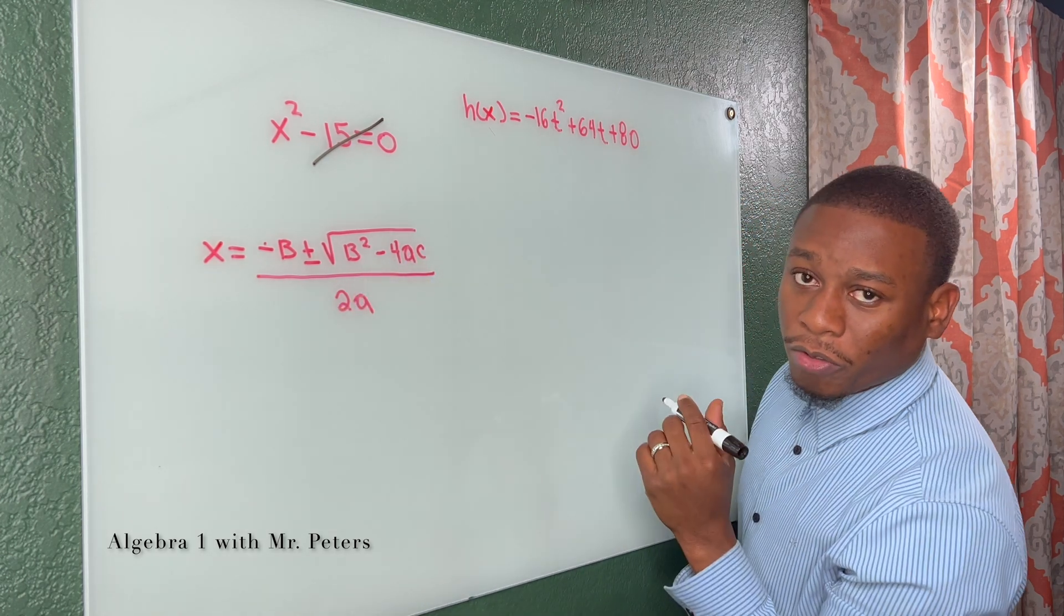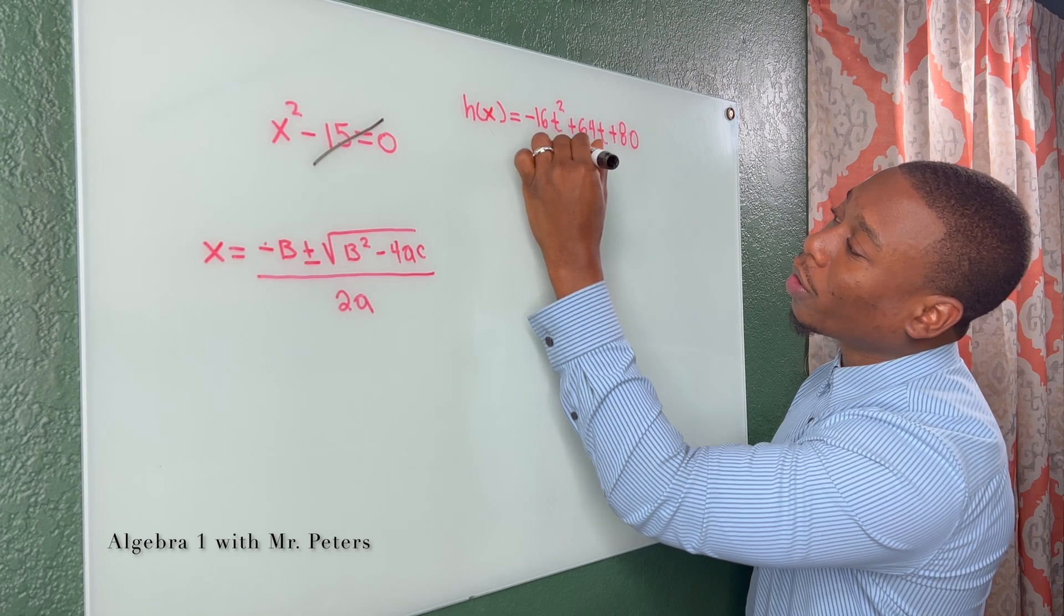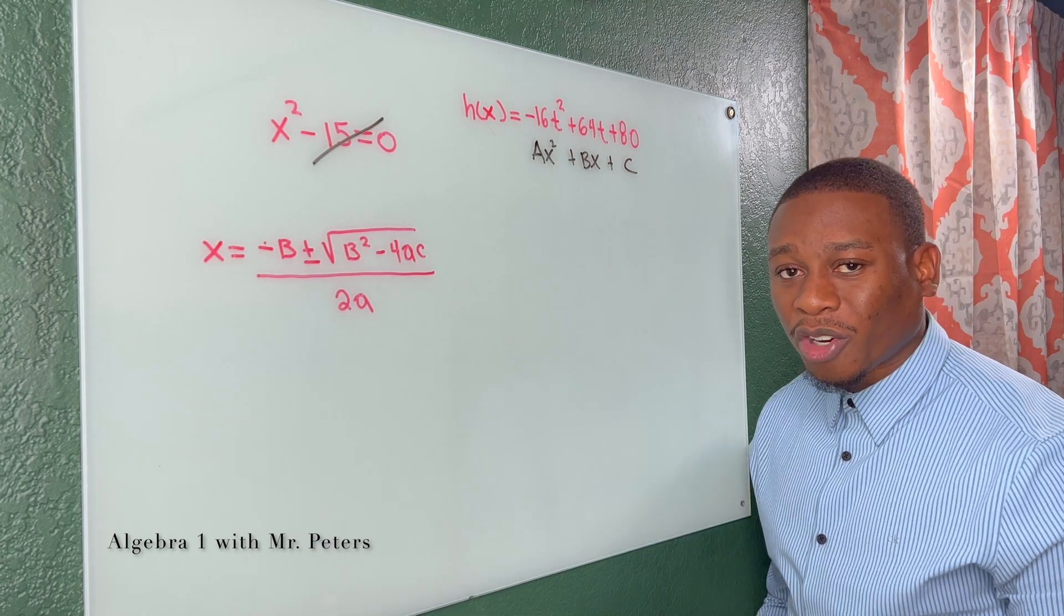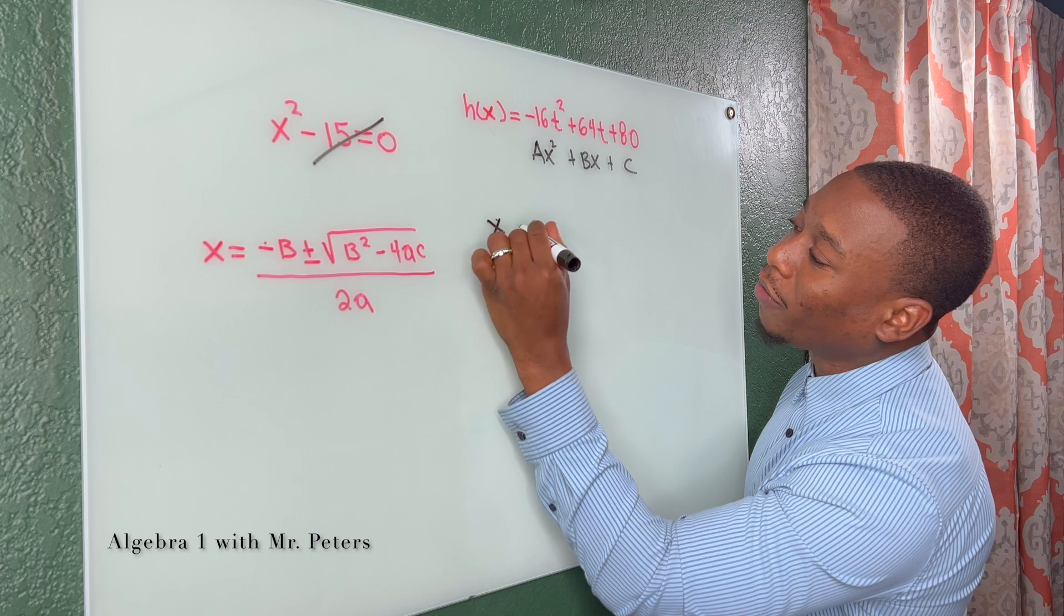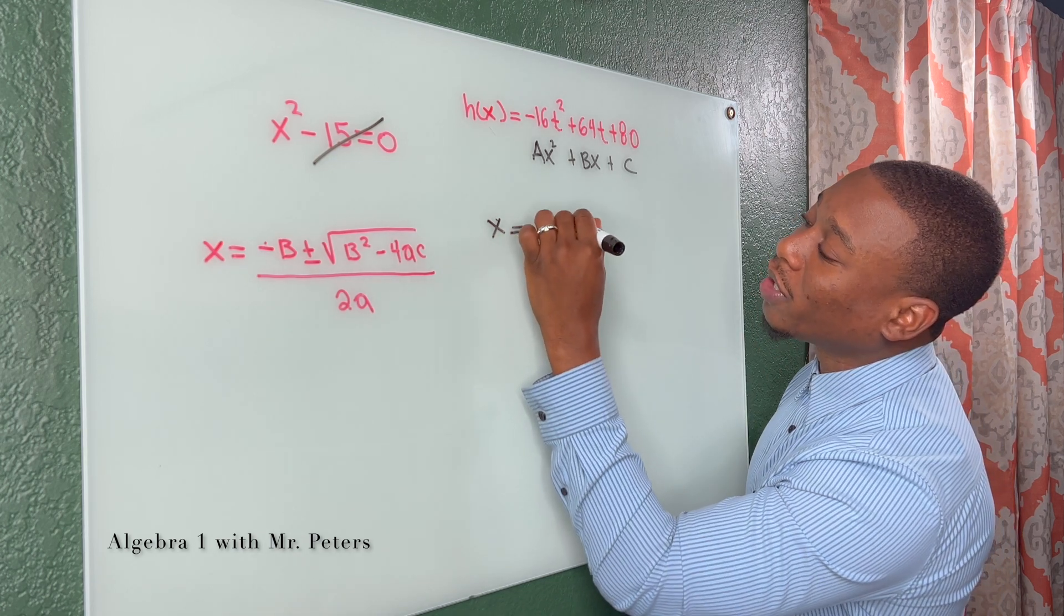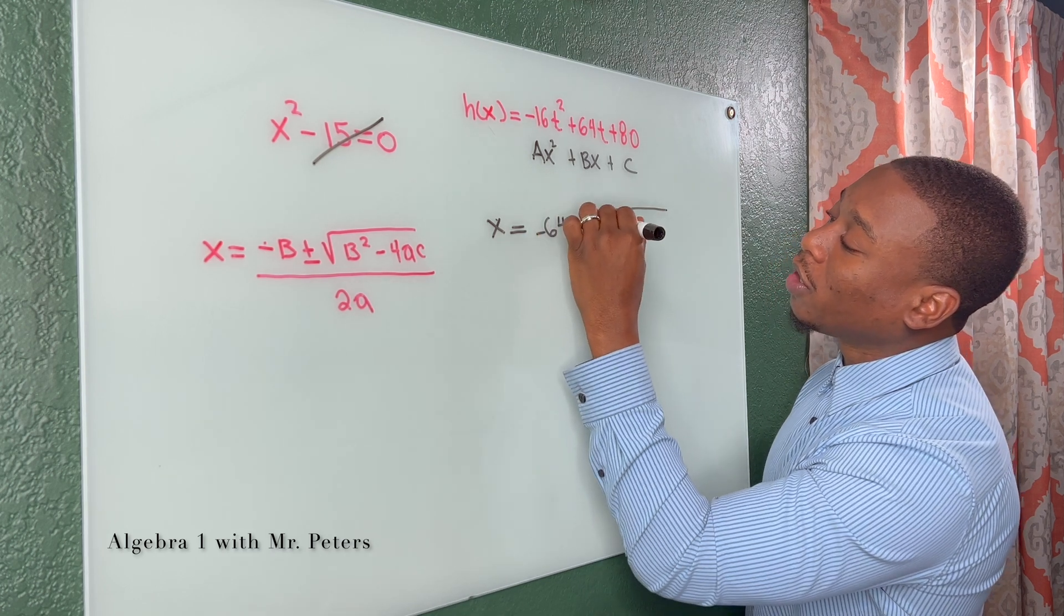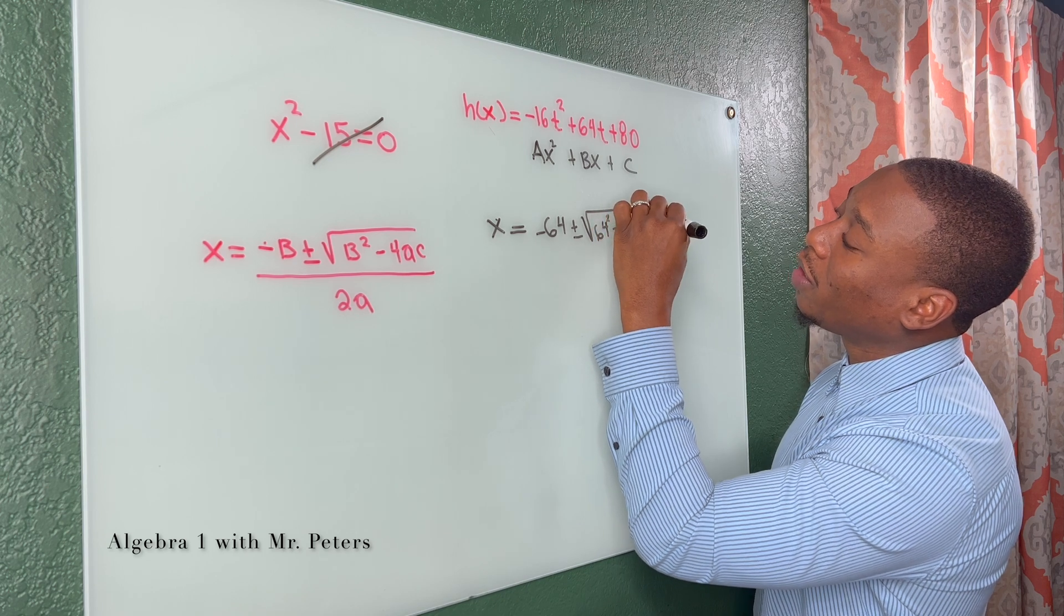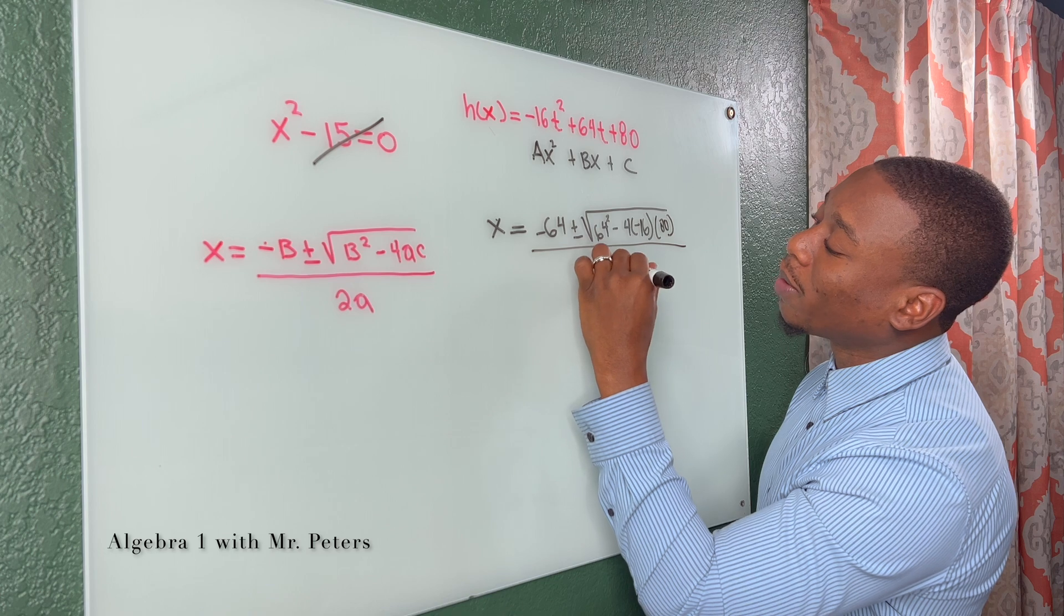All right, so now that we know the formula, there's one other thing that's important. ax squared plus bx plus c, right? We just got to know which term is which. So in our first example, when we start solving, I'd have x is equal to the opposite of b. So that means 64 is negative plus or minus 64 squared minus 4 times negative 16 times 80. And this is all divided by 2 times negative 16.